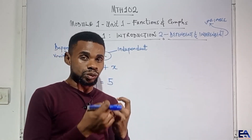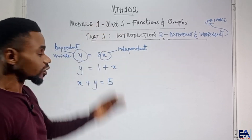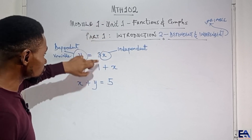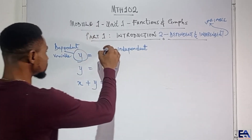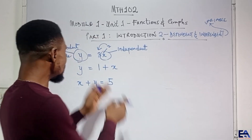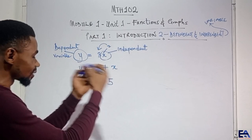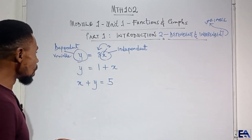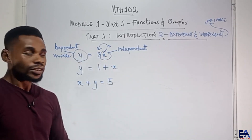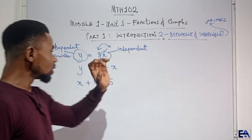When the independent variable finds a value — for instance, when x equals 5, we multiply 5 by 3 to give us 15, so y becomes 15. If x is 2, then 2 times 3 is 6, so y equals 6. If x is 1, then 3 times 1 is 3, so y equals 3. Whatever the value of x is, is what determines the value of y — that is why we say y depends on x.